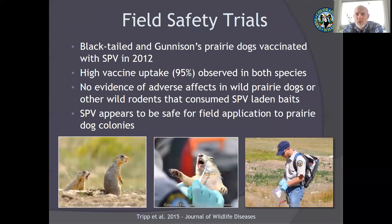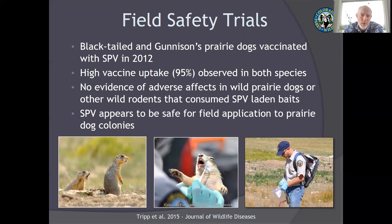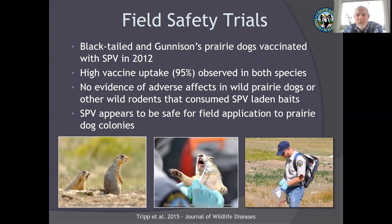In 2012 in Colorado, we conducted field safety trials on Gunnison and black-tailed prairie dogs. We observed high vaccine uptake with the biomarker — 95 percent of prairie dogs had consumed one of these baits. We saw no evidence of adverse effects in prairie dogs or other non-target rodents that consumed the baits. The vaccine appeared to be effective and safe for use in prairie dog colonies, and that really started the broader research program.